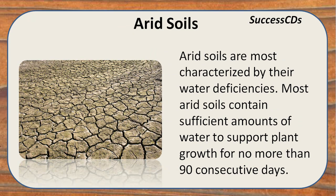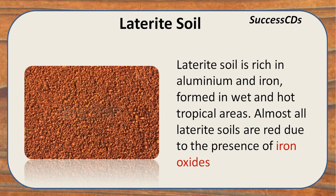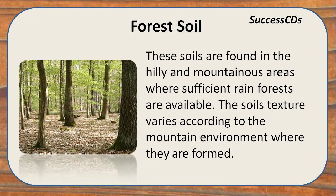Arid soil is not very good for agriculture as it has poor water retention, but with good irrigation it can support wheat, barley, and flax seeds. Laterite soil is rich in aluminium and iron, formed in wet and hot tropical areas, and is red in color due to iron oxides. It is formed due to leaching — the loss of minerals and organic solutes from soil due to high temperature and heavy rain. Forest soils are mainly found in mountainous and hilly areas where sufficient rain is available, with texture varying according to the mountain environment.